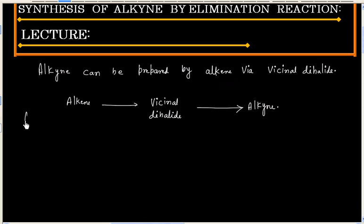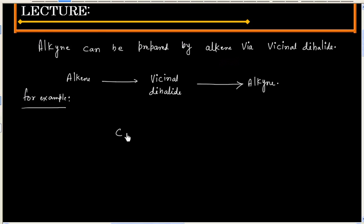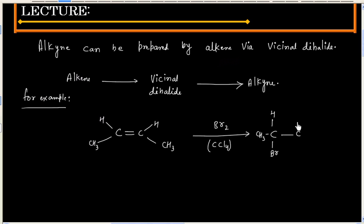For example, let us say we have this alkene, and this can be treated with bromine. CCl4 is the solvent. This will give vicinal dihalide.